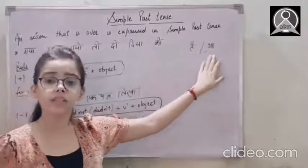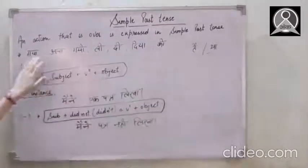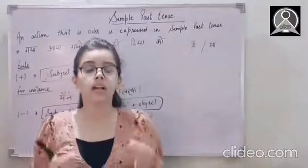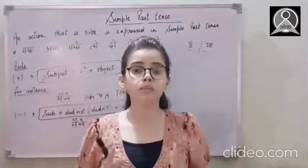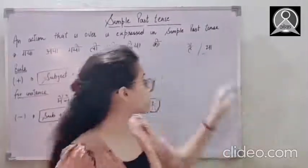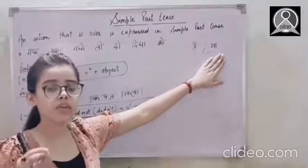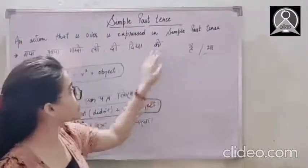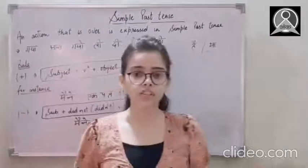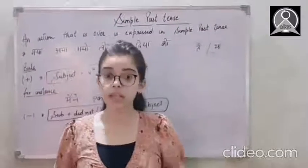And when there is tha with all of these words like gaya tha, aya tha, gai thi, li thi, di thi, dia tha, then it is always past perfect tense, not simple past. Because this shows like past tense. And if we are adding this with these words, it means that action is perfectly done in the past.